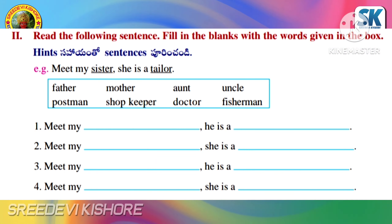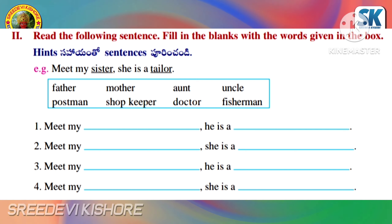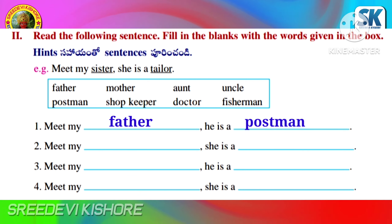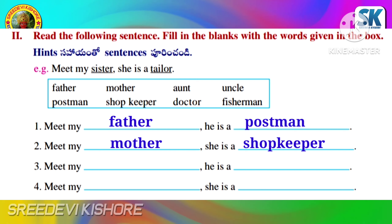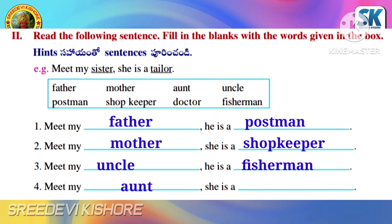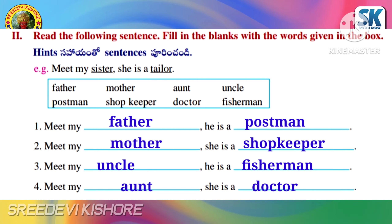Read the following sentences and fill in the blanks with the words given in the box. Example: Meet my sister, she's a tailor. Meet my father, he's a postman. Meet my mother, she's a shopkeeper. Meet my uncle, he's a fisherman. Meet my aunt, she's a doctor.